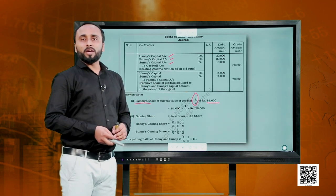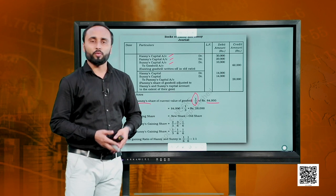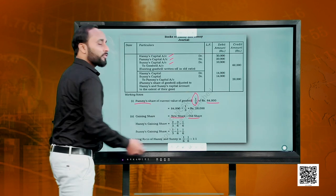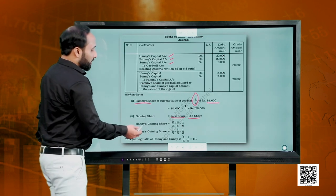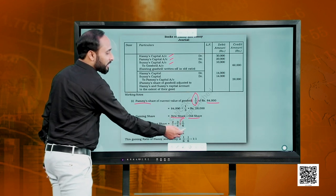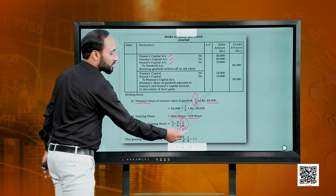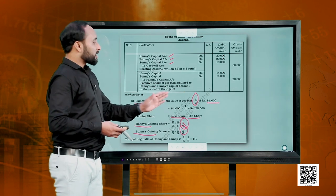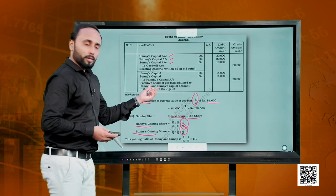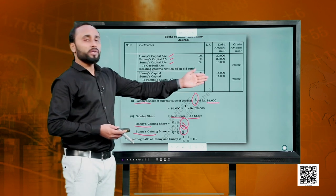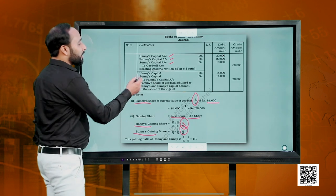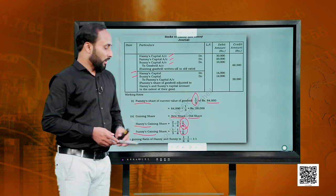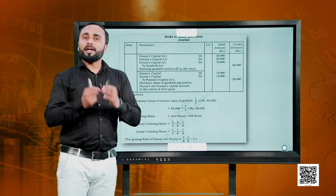This share will be given to Pammy by the gaining partners in their gaining ratio. We calculate the gaining ratio by subtracting the old share from the new share. Henny's gain is 1/6 and Sunny's gain is 1/6, meaning their gaining shares are equal — 1:1. So this 28,000 will be given to Pammy equally by Henny and Sunny, which is 14,000 each. We debit Henny and Sunny by 14,000 each and credit Pammy by 28,000.